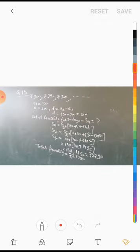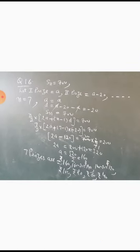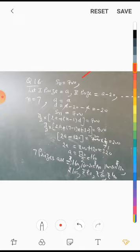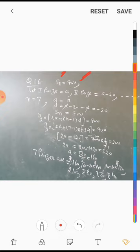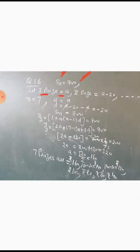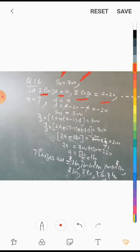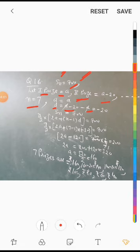Question number 16: Total money available is Rs. 700, which is S_n. We need to give 7 cash prizes, and each prize is Rs. 20 less than the previous one. Let the first prize be 'a', then second is (a-20), third is (a-40), and so on. Number of prizes n = 7. Common difference d = (a-20) - a = -20.